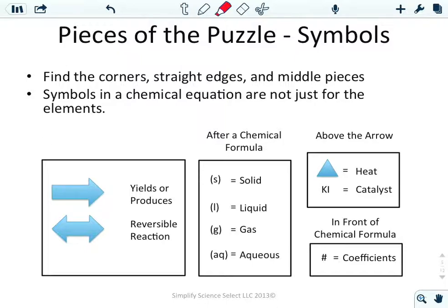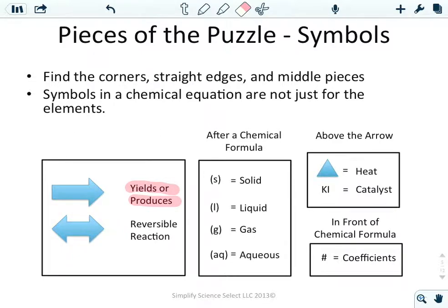The symbols in a chemical equation are like finding the corners and straight edges of a puzzle — they're not just from the periodic table. Anytime we see an arrow, it means 'yields' or 'produces.' A single arrow means the reaction only goes one way — it can only go forward and cannot reverse. A double arrow indicates a reversible reaction, where reactants produce products and those products can become reactants again.